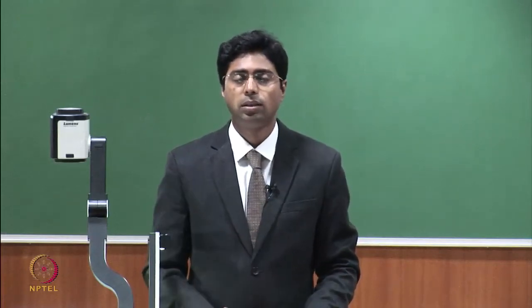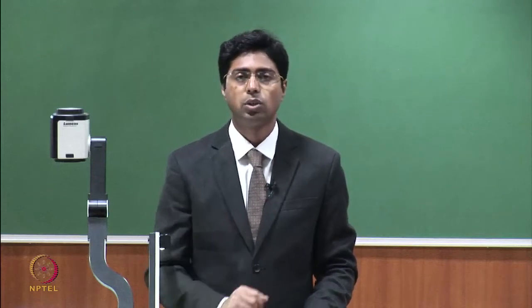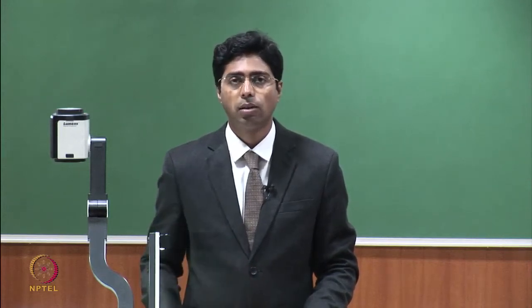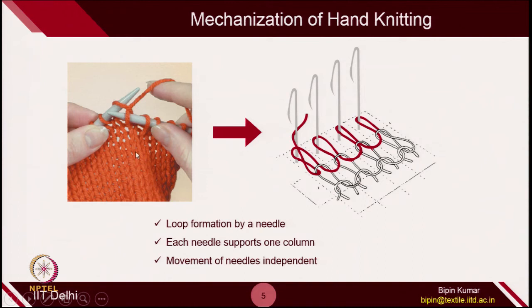Apart from tension control, the big advantage of this process is that since each needle is independent, their movements are independent. We don't have to keep any particular needle idle at all times — it is possible that all the needles can operate simultaneously. In contrast to hand knitting, where you are making one loop at a time and other columns are doing nothing, in this process all needles can operate simultaneously. So naturally, the production will go multifold.